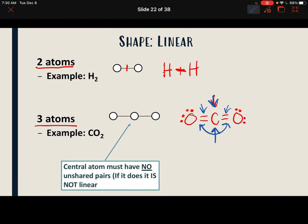For a linear shape, the central atom must have no unshared pairs. So for three atoms with no unshared pairs on the central atom, the shape is linear.